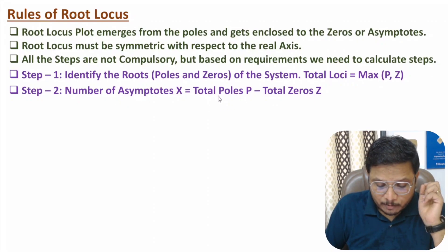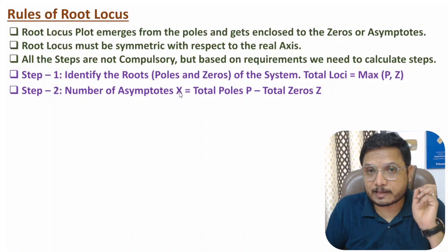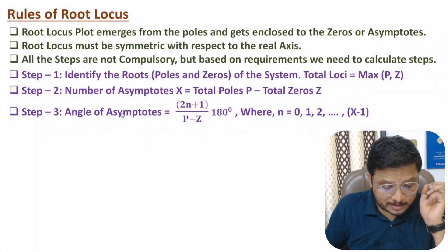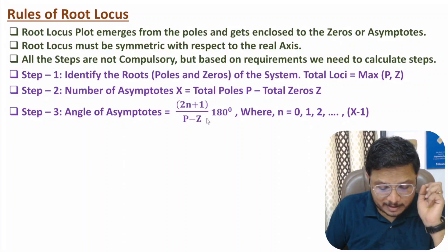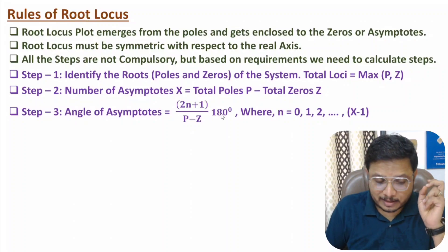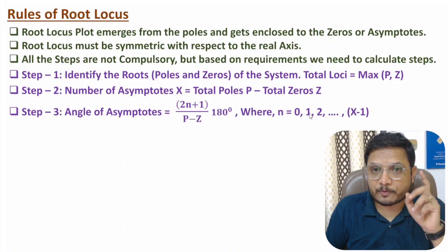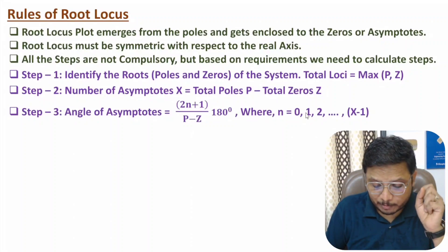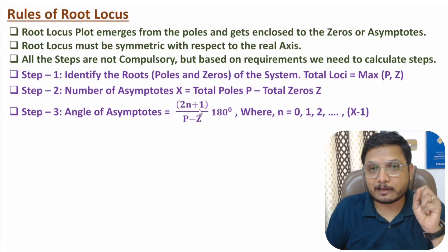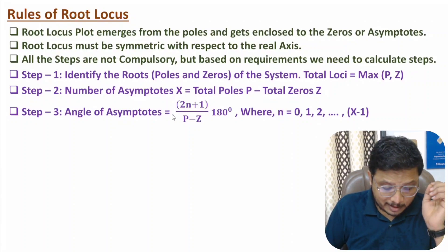Once you identify the number of asymptotes, you need to identify the angle of asymptotes. The angle of asymptotes is based on the formula: (2n + 1) / (P − Z) × 180°. If you have two asymptotes, the value of n will be 0 and 1. Placing n = 0 gives the first angle and n = 1 gives the second angle. So based on the value of n you can identify the angle of asymptotes.